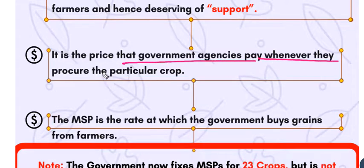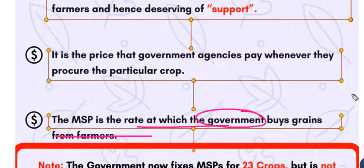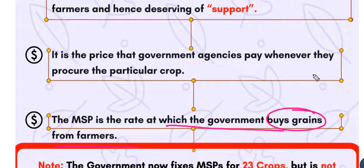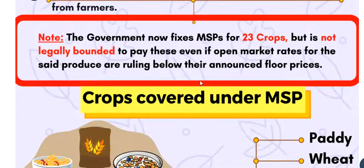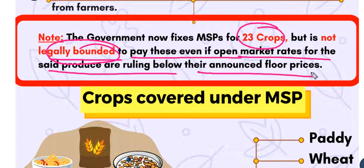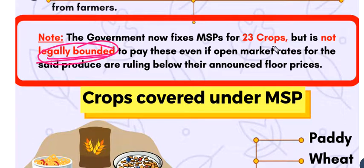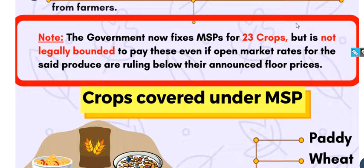So what is Minimum Support Price? It is the price that government agencies pay whenever they procure a particular crop. MSP is the rate at which the government buys grains from the farmer. However, MSP is not legally binding — there is no statutory obligation on the government to pay MSP even if open market rates fall below the announced floor prices. The current farmer protest demands that MSP be made legally binding.